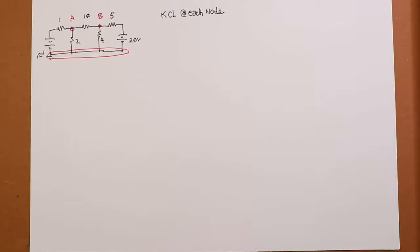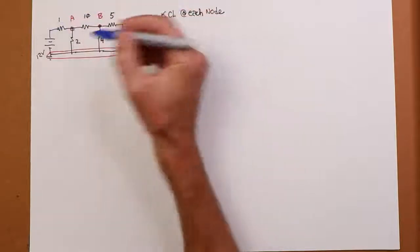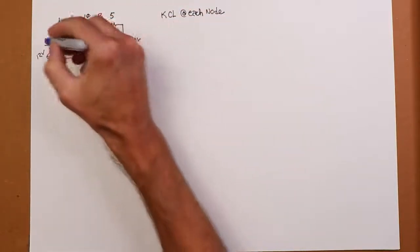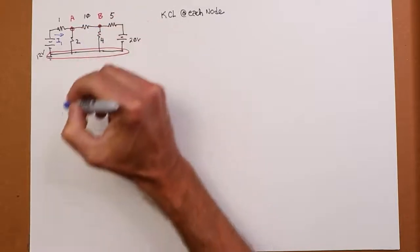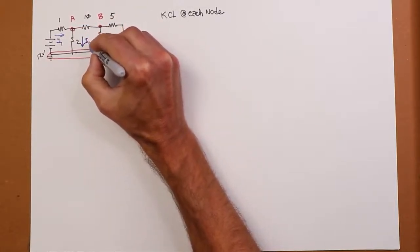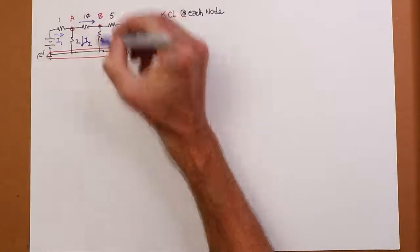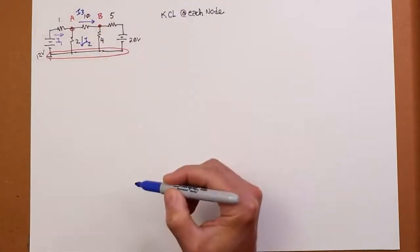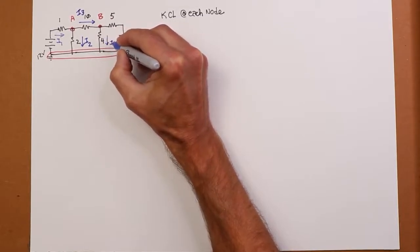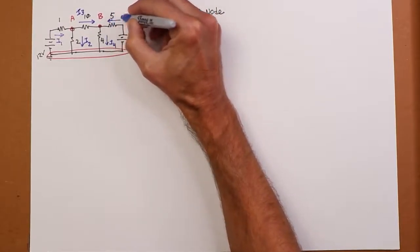Now you're going to create a KCL equation at each node with the exception of the reference node. In our case, that's A and B. We're going to wind up with two equations here. Now before we do this, I want to define where the currents are. So, directions are kind of arbitrary in a way. As you'll see, it's not going to make any difference.